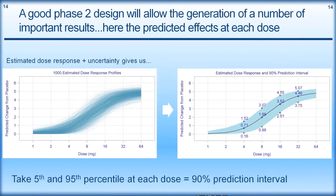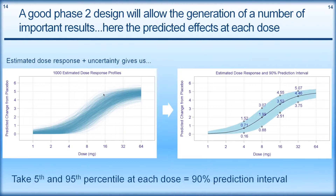A good Phase II design will allow generation of a number of important metrics. The predicted effect of each dose comes from the estimated dose-response parameters and their uncertainty. We don't just get one prediction from a dose-response model - we get 1,000 different predictions. We think the curve looks something like the central estimate, but it could look like some of those other lines. With these 1,000 curves, at each point we take the 5th and 95th percentile to summarize uncertainty.